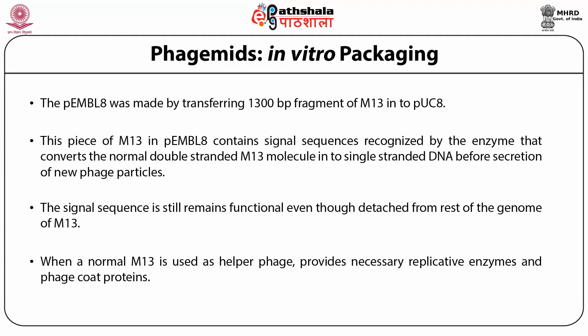For the in vitro packaging of phage particles of phasmid vectors like pEMBL8, it is necessary to understand how phage is made in vitro packaging. The pEMBL8 was made by transferring a 1300 base pair fragment of M13 to pUC8. This piece of M13 in pEMBL8 contains signal sequences recognized by enzymes that convert the normal double-stranded M13 molecule into single-stranded DNA before secretion of new phage particles. The signal sequence remains functional even when detached from the rest of the M13 genome. When a normal M13 is used as a helper phage, it provides the necessary replicative enzymes and phage coat proteins.